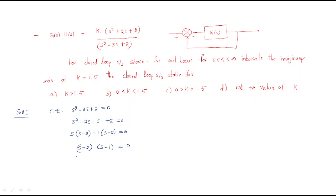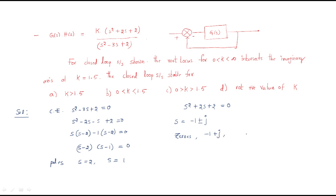We have two poles: s = 2 is one pole and s = 1 is the other pole. Next, we find the zeros from the numerator: s² + 2s + 2 = 0. Solving this second-order equation, we get two complex zeros: s = -1 + j and s = -1 - j.